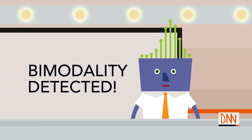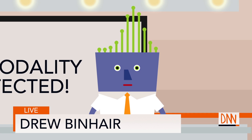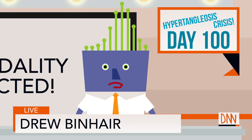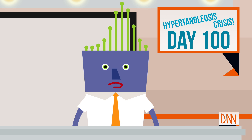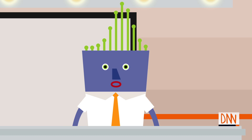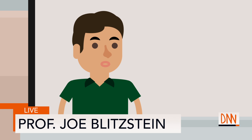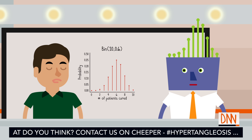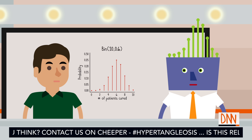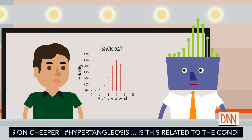Breaking news! This is Jen. Bimodality detected. Day 100 of our continuous coverage of the hypertangulosis crisis has brought us a shocking statistical development. We go to Professor Blitzstein for more. A few months ago, I suggested the binomial distribution as a plausible model for how many patients will get cured on a given day. Now, with much more data, it has become clear that the binomial model is inadequate.